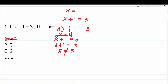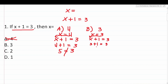Let's plug in b. B says three, so we let x equal three and substitute into x plus one equals three. This becomes three plus one equals three. Three plus one is four. Does four equal three? It does not. Therefore, we know b is not correct.